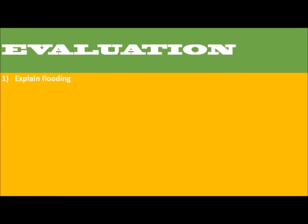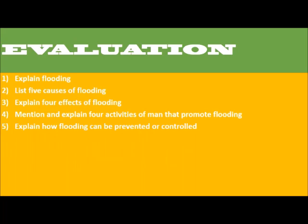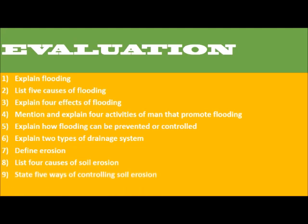Evaluation. 1. Explain flooding. 2. List 5 causes of flooding. 3. Explain 4 effects of flooding. 4. Mention and explain 4 activities of man that promote flooding. 5. Explain how flooding can be prevented or controlled. 6. Explain 2 types of drainage system. 7. Define erosion. 8. List 4 causes of soil erosion. 9. State 5 ways of controlling soil erosion. 10. Mention 5 effects of erosion.